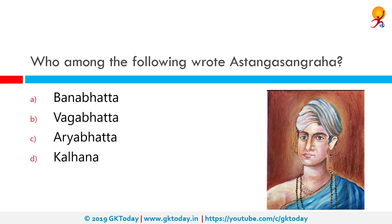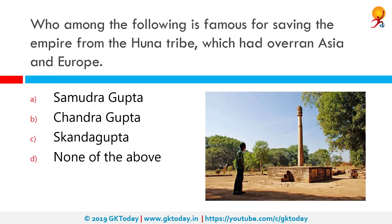Who among the following wrote Ashtanga Sangraha? The correct answer is Vagabhatta. Vagabhatta is one of the most influential classical writers of Ayurveda. Several works are associated with his name, principally Ashtanga Sangraha and Ashtanga Hridaya Samhita. Current research argues that these two works cannot be the product of a single author, but since we do not have much proof from those times, we still consider him the writer of Ashtanga Sangraha.